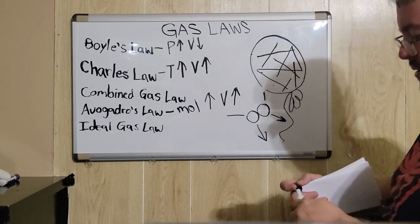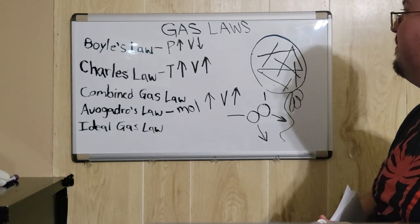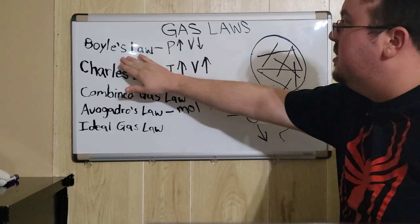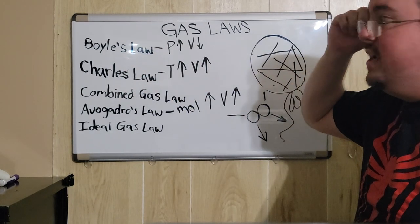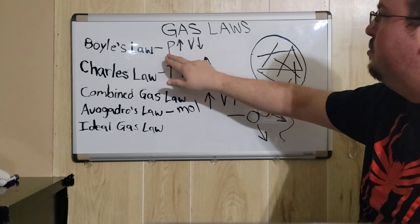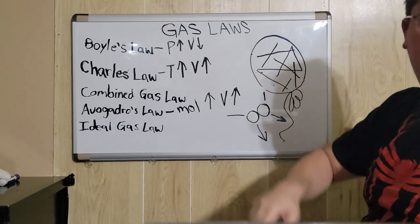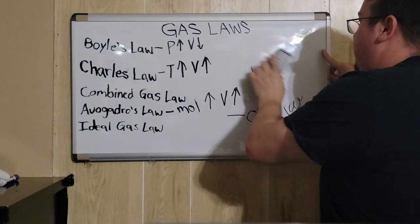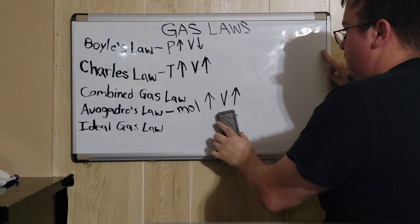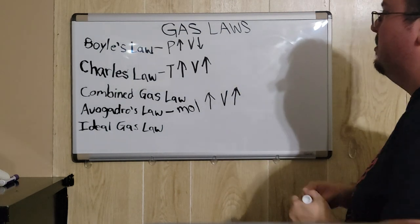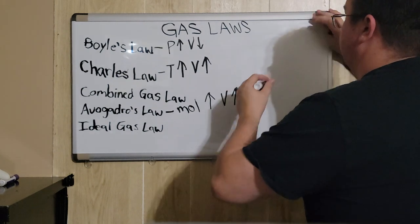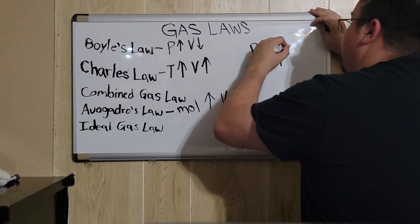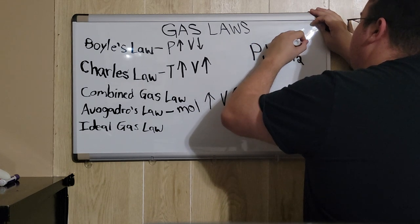Now that we have that established, let's start with Boyle's law. Boyle's law says that there is a proportional relationship between pressure and volume. That relationship is represented by the equation P1 times V1 equals P2 times V2.